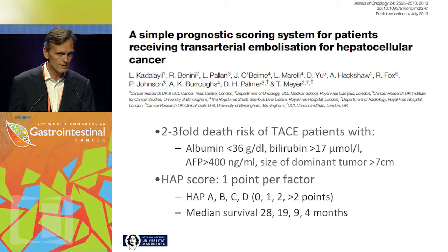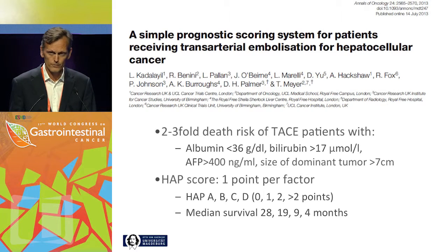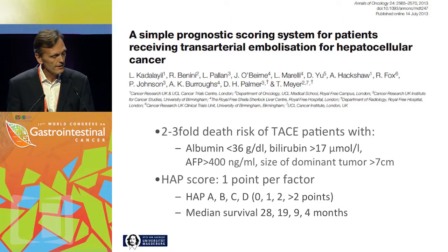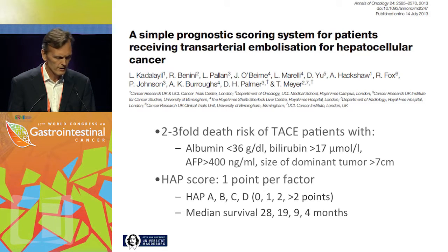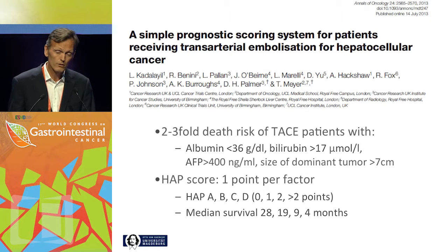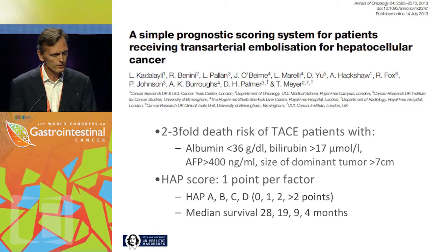Another score system published recently comes from the UK: the HUB score, identifying a two- to three-fold death risk in TACE patients with decreased albumin or increased bilirubin, AFP greater than 400, and dominant tumor size exceeding seven centimeters. You allocate one point per positive factor. With HUB score A, B, C, and D equal to zero, one, two, or more than two points, the proposed median survival is 28, 19, nine, and four months — highlighting the importance of dominant tumor size and underlying liver function in selecting patients for chemoembolization.